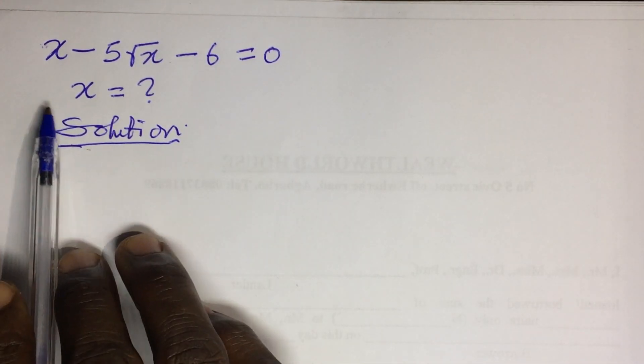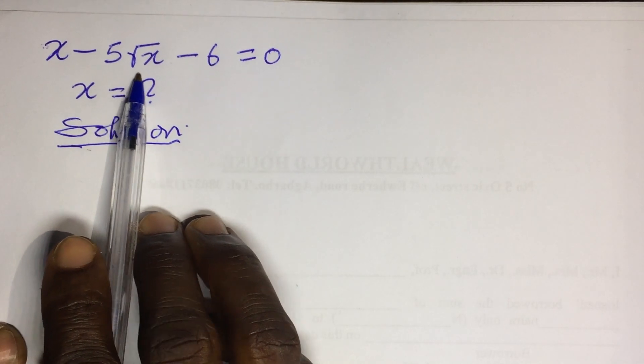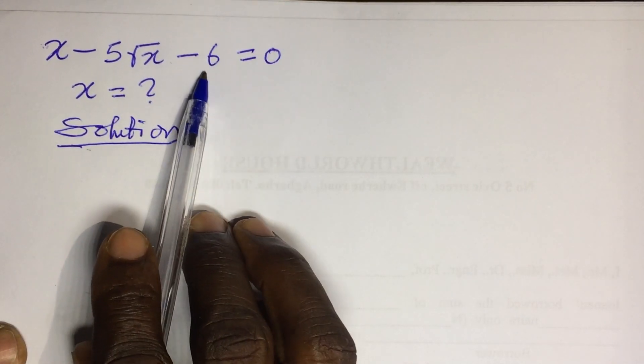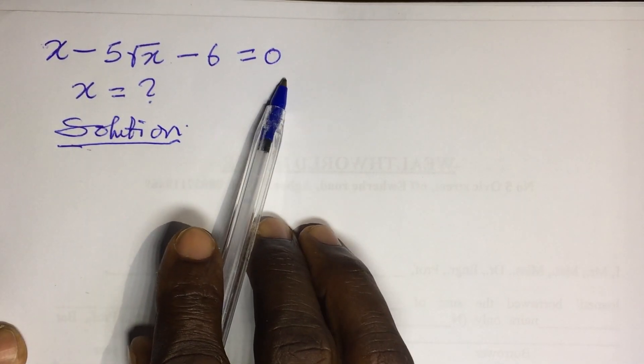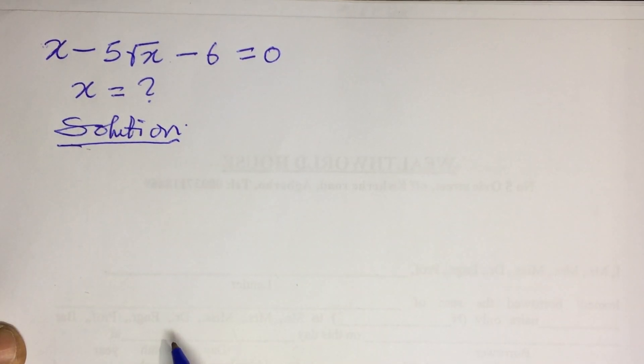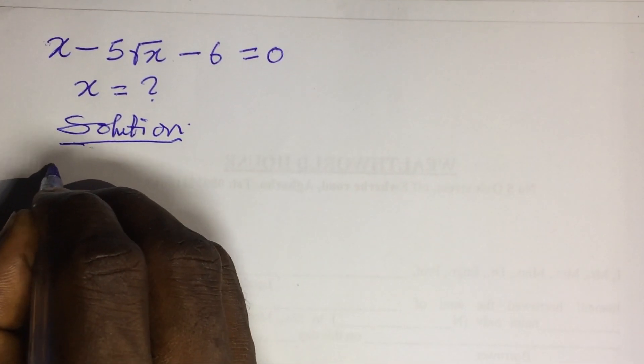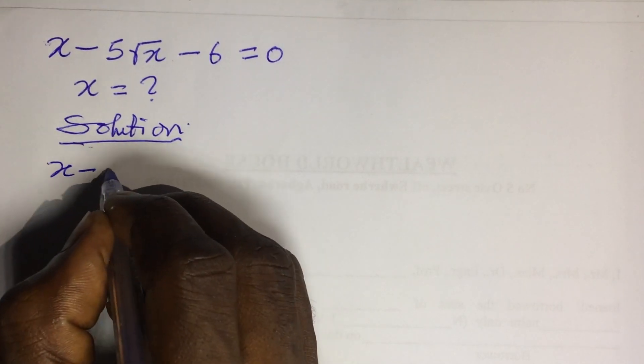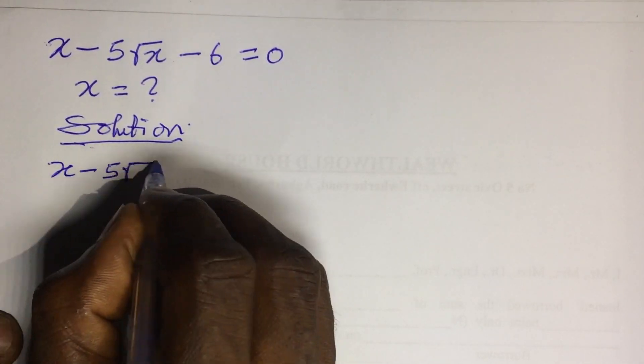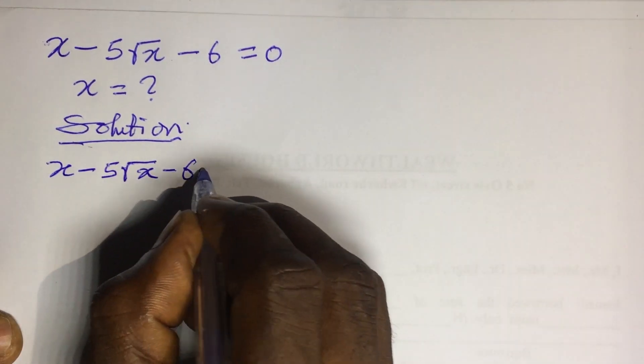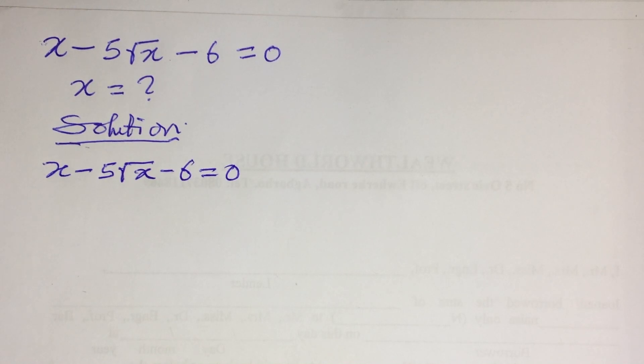Now the question reads: x minus 5 root x minus 6 equals 0. What will be the possible value or values of x? Let's put down our question: x minus 5 root x minus 6 equals 0. We are going to use two methods for solving this challenge.